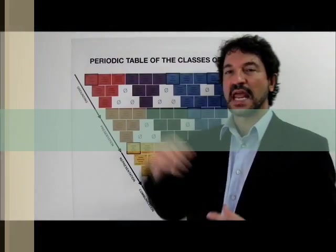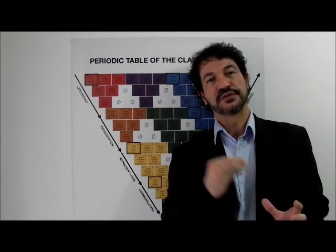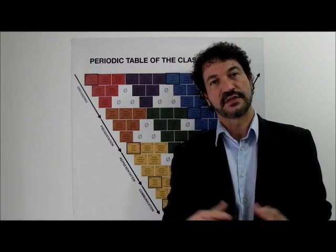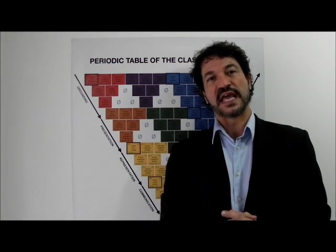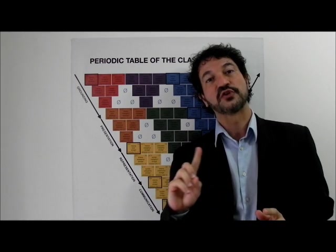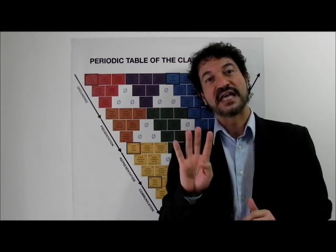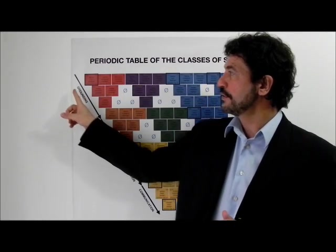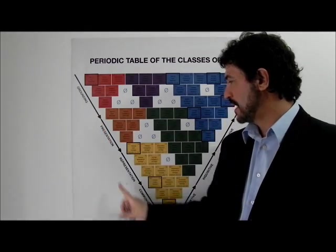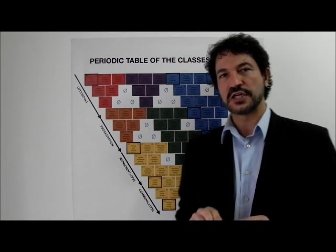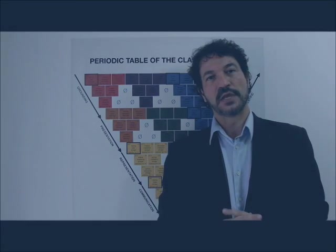A periodic table is a diagram printed on the plane that shows the periods involved in a process, an event, or object. The periods we are talking about in this case are described by the solenoid of semiosis. This diagram, the solenoid of semiosis, has four periods: grounding, presentation, representation, and communication.